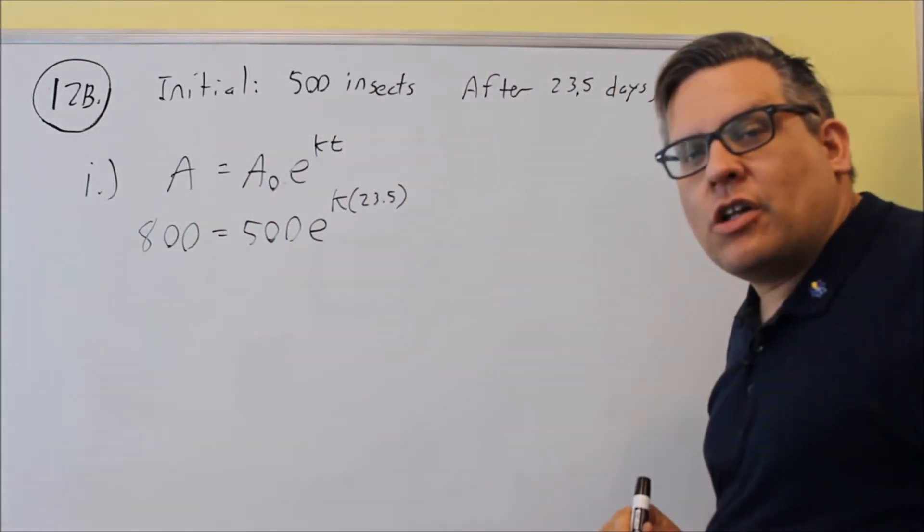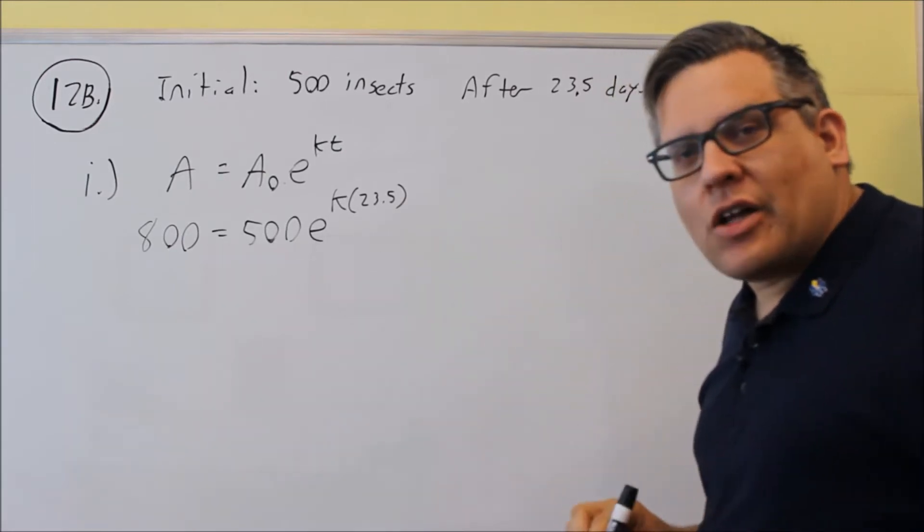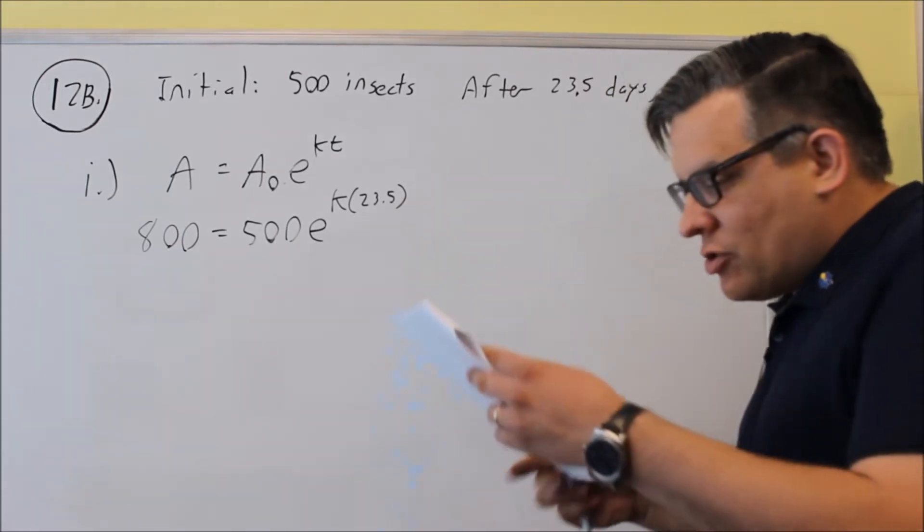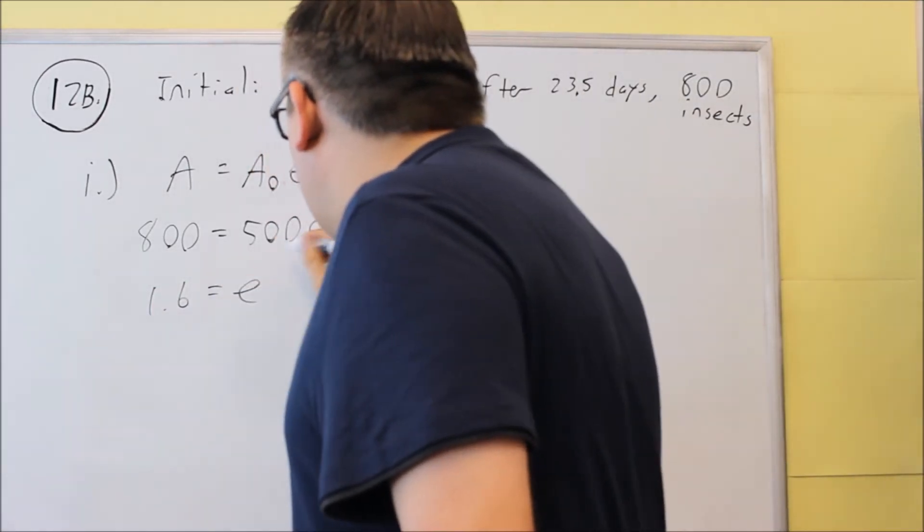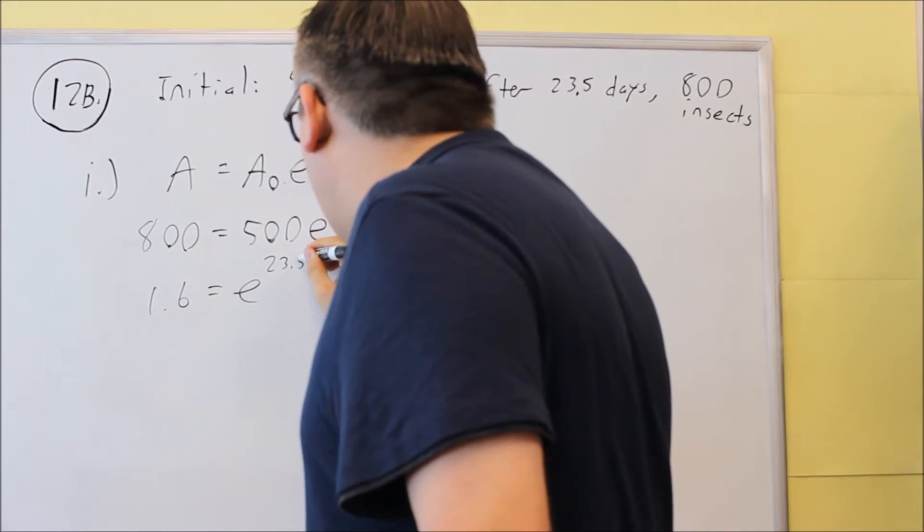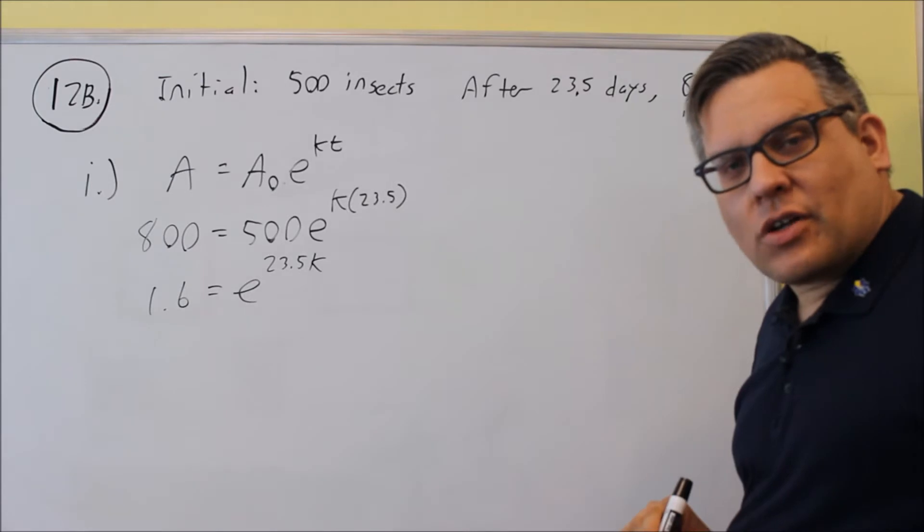So now we have everything that we need in order to solve for K. First, we're going to divide both sides by 500, so when we do that, we get exactly 1.6, and this is 23.5K. So that's an ending decimal there, just 1.6.